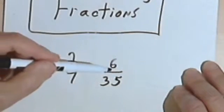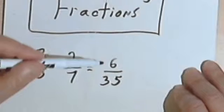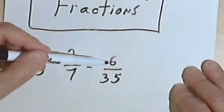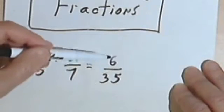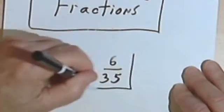Then you always want to look and make sure that you can't simplify or reduce it. In this case I can't. I can't divide 6 and 35 by any numbers that are the same. So that's going to be my answer.